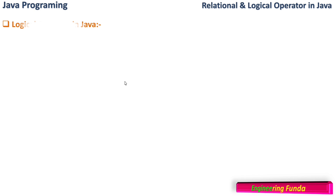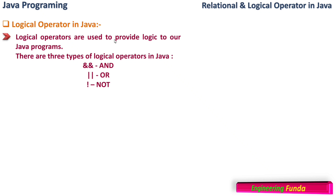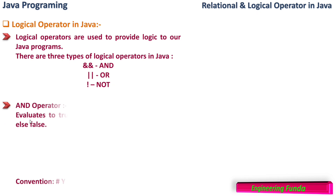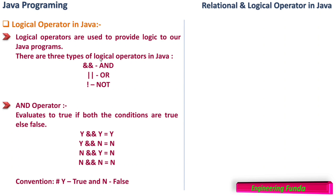Now let us look at the logical operators available in Java programming. Logical operators are used to provide logic to our Java programs, allowing you to apply logic with multiple conditions and combine those conditions. There are three types of logical operators in Java: AND (&&), OR (||), and NOT (!). The double ampersand is AND, the double pipe sign is OR, and the exclamation mark is NOT.